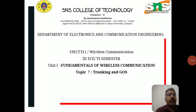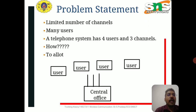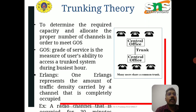Today we are going to see about trunking and grade of service in wireless communication. The problem statement is: we have only a limited number of channels but users are in large numbers. In a telephone system, if only three channels are available but there are four users, how can we allocate fewer channels to a larger number of users? Trunking theory is used to determine the required capacity and allocate the proper number of channels.